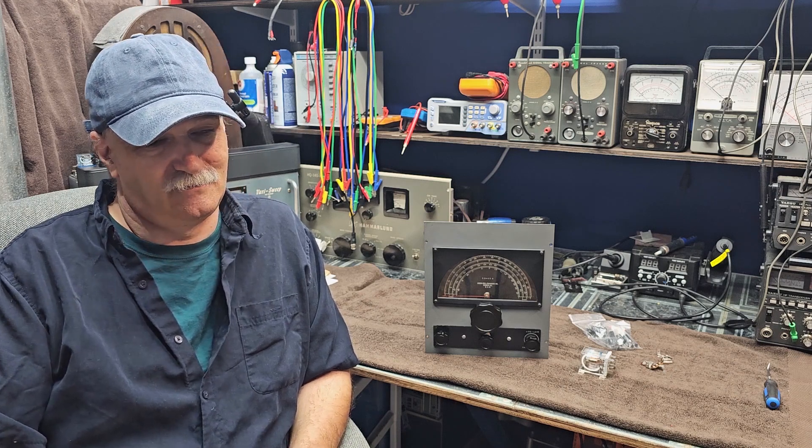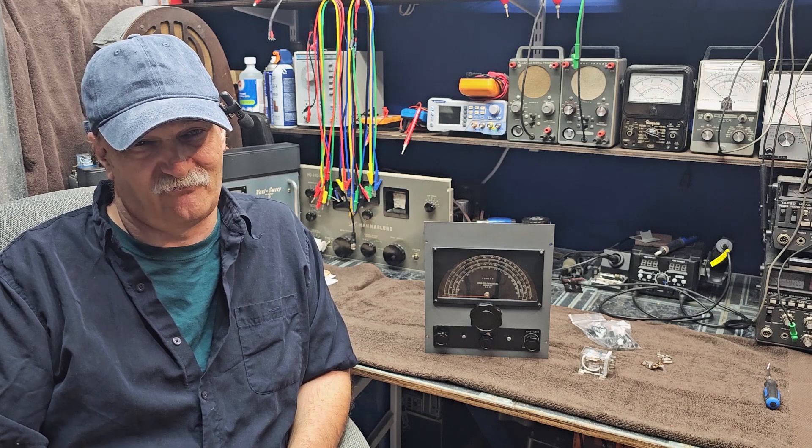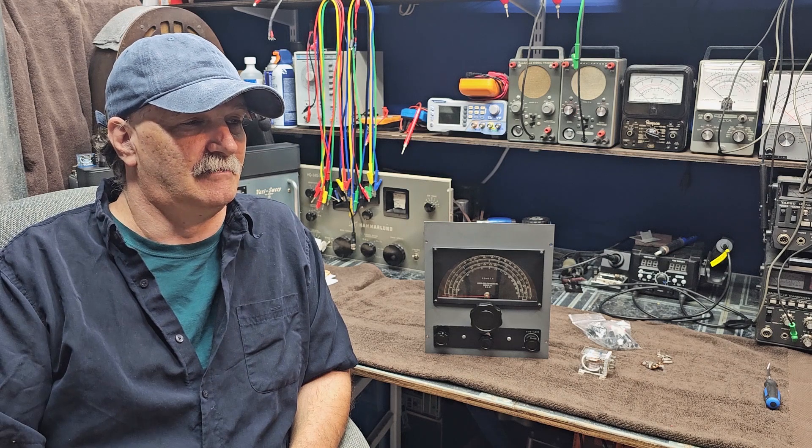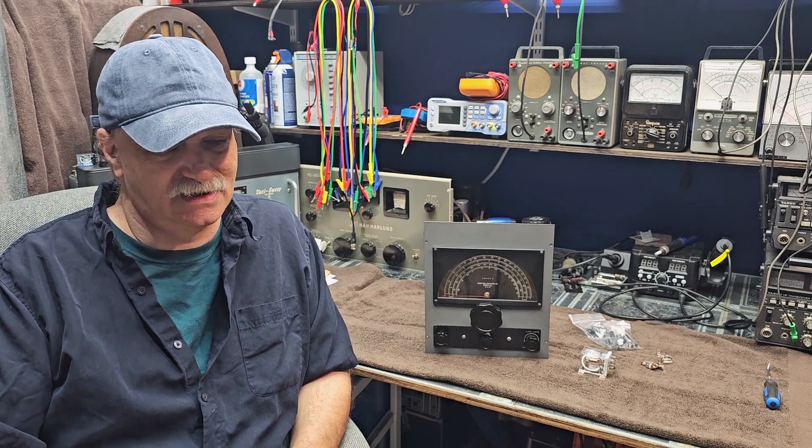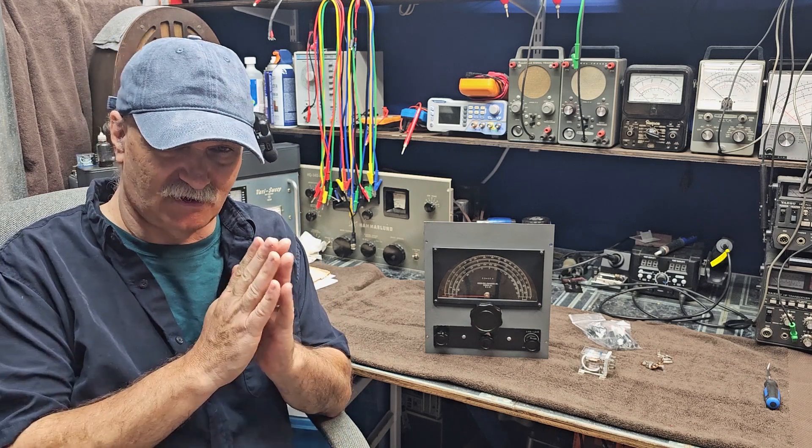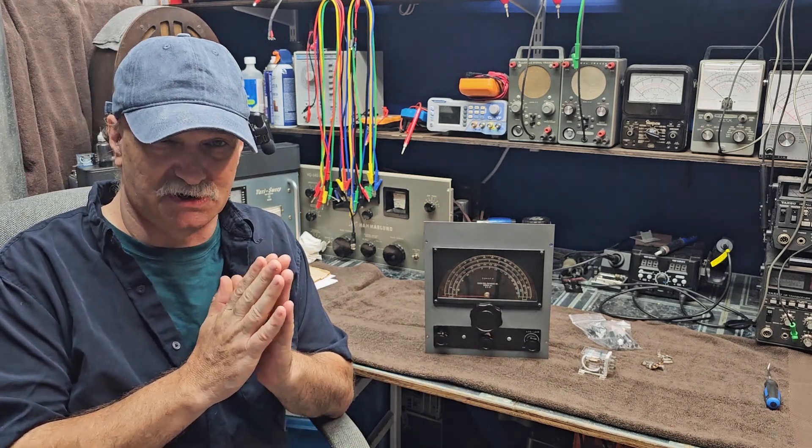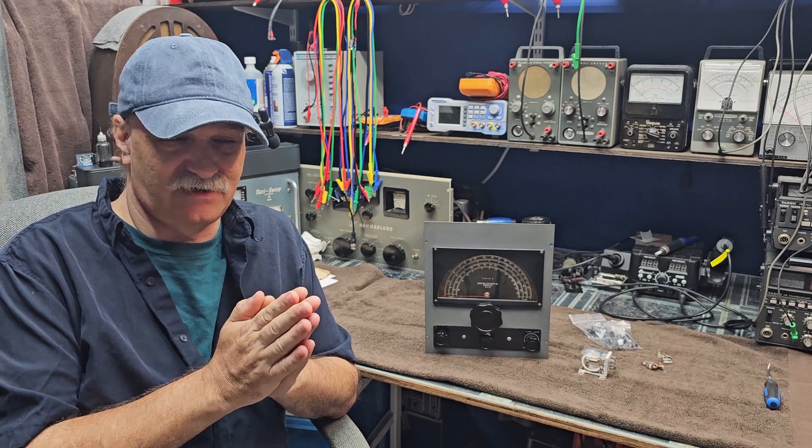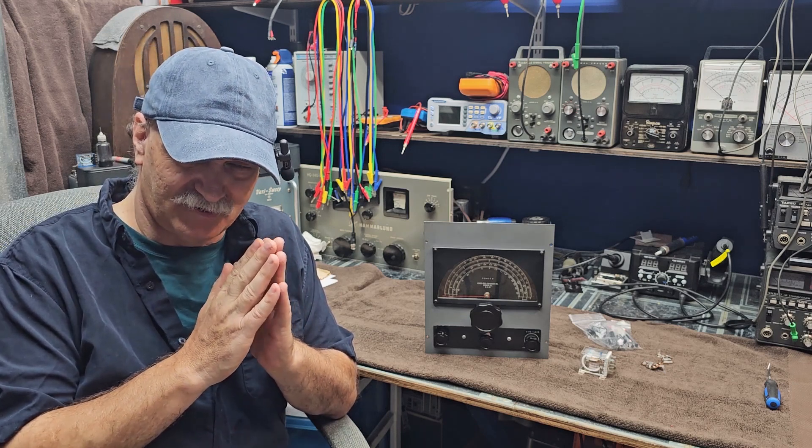Some radios don't necessarily have an RF amp before their front end or antenna coils. There's also the issue of images which we're going to get into later. So this focuses on a very narrow section of a band that you tune to. The coils in it are very sharp.